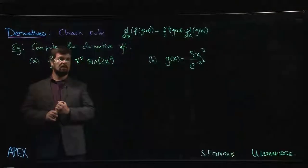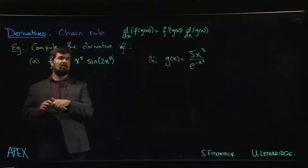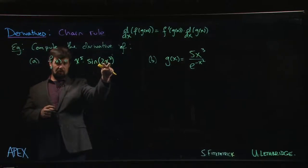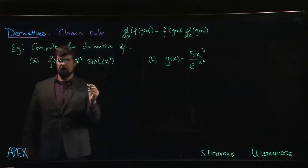So we'll come over here to the first one. f of x is going to be a product. There's a power function multiplied by a sine function, and here we see composition. That's where the chain rule is going to come into effect.